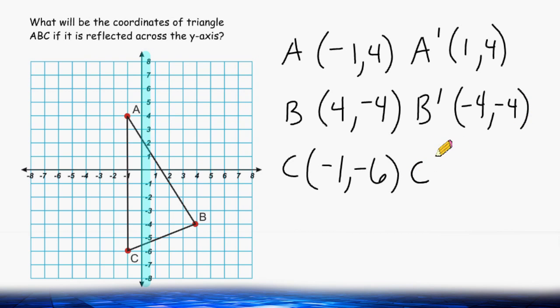For point C, the opposite of negative 1 is positive 1. And we are going to keep negative 6 exactly as it is.